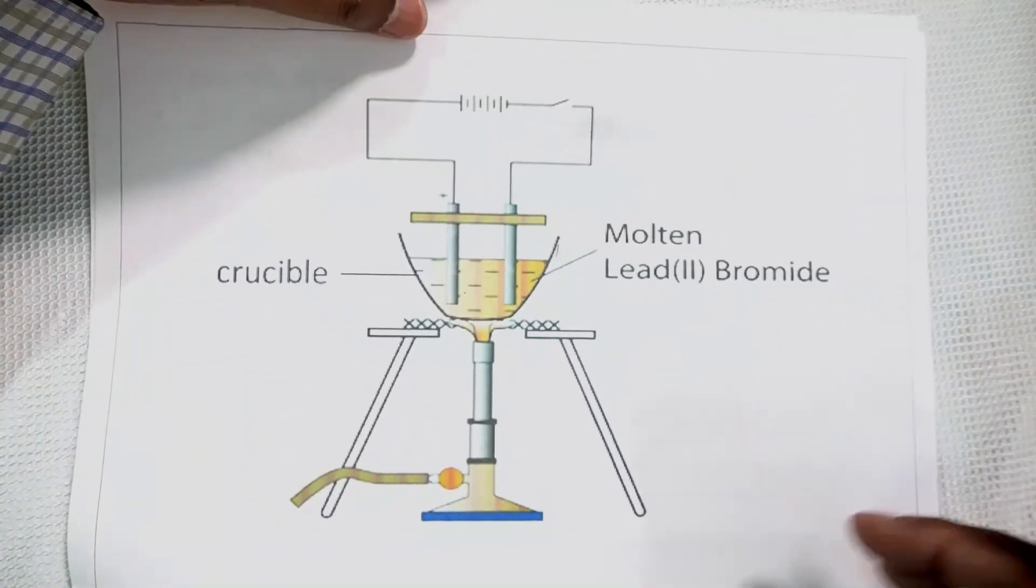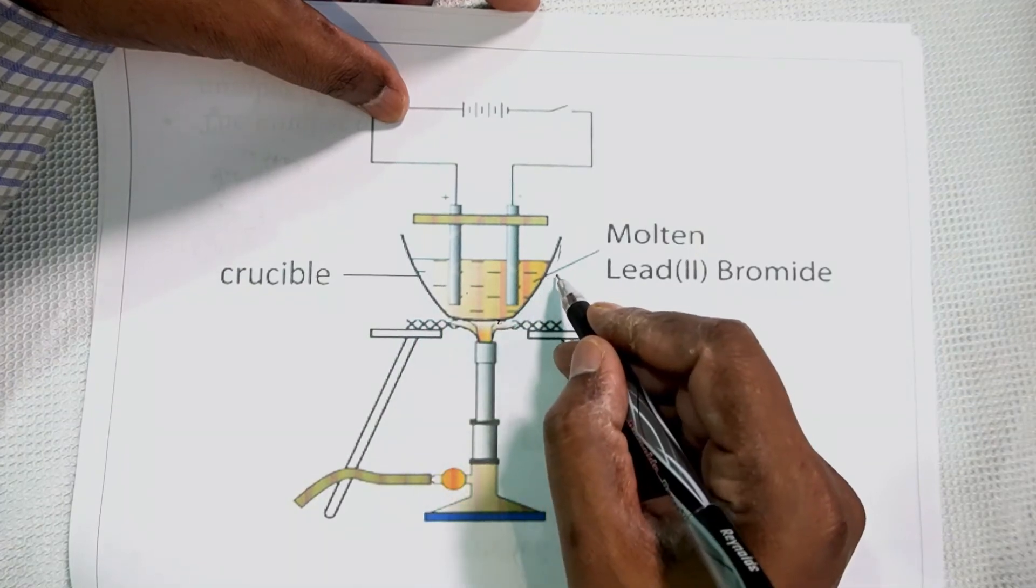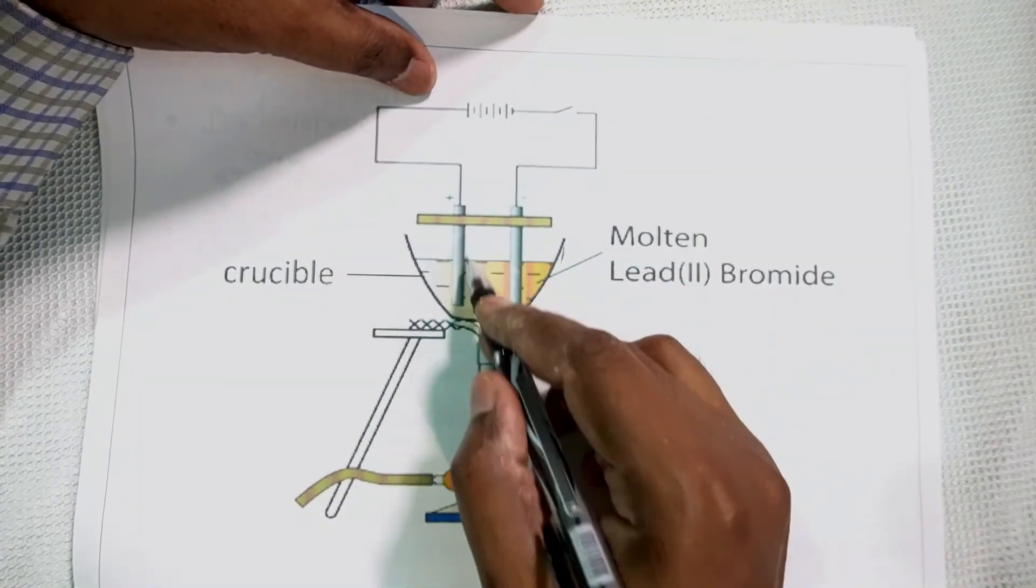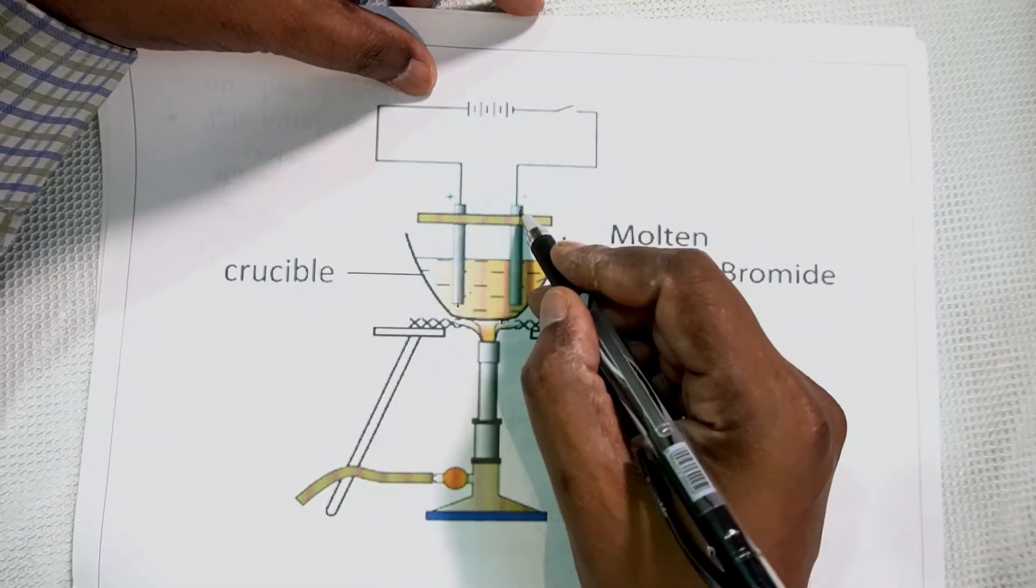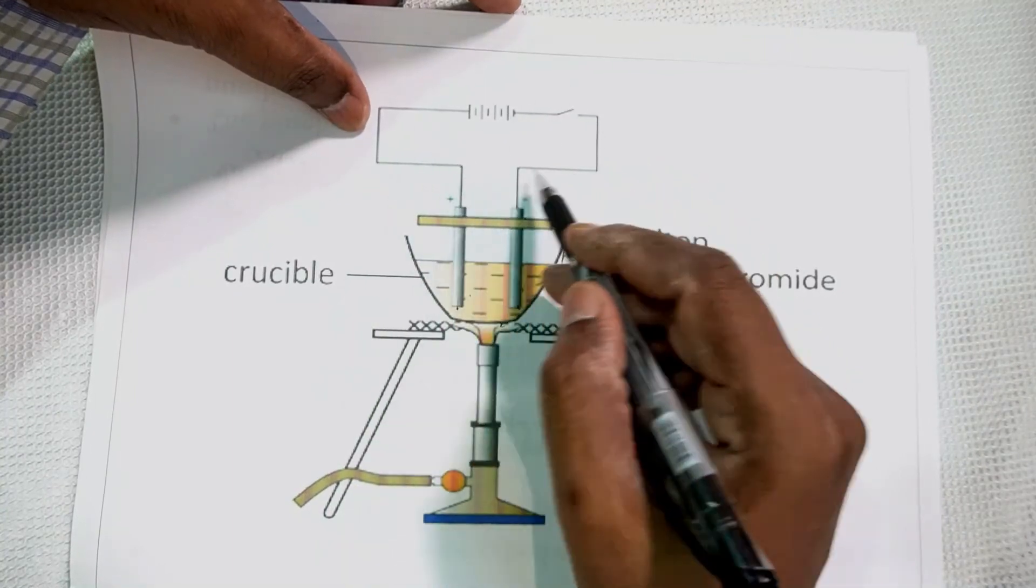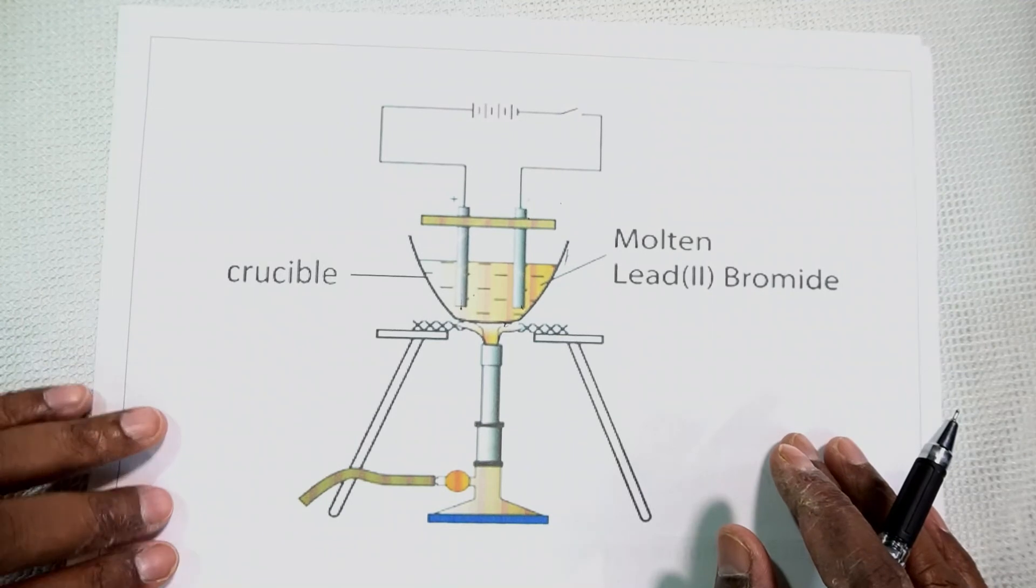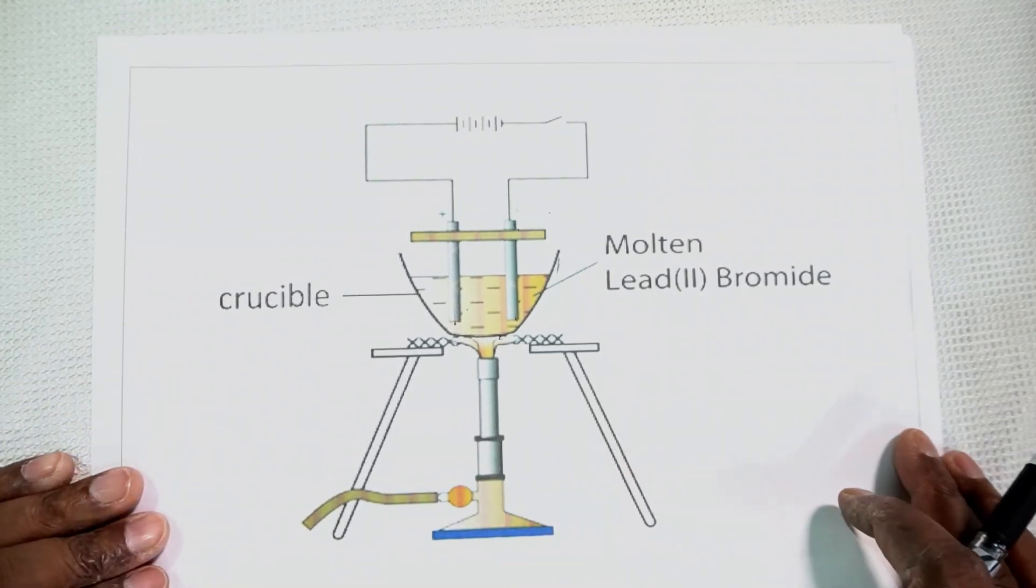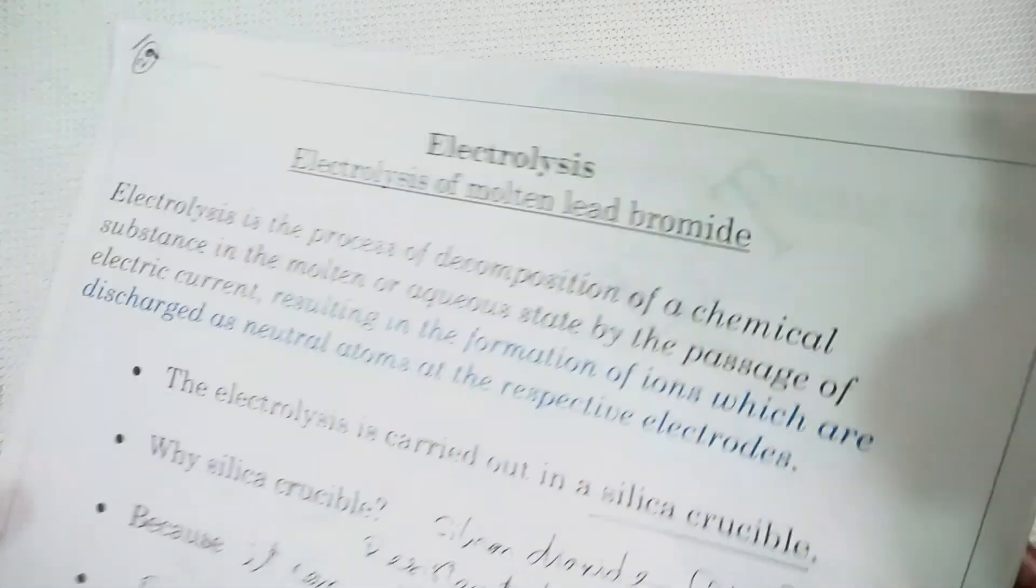So here we have the setup, experimental setup. The silica crucible is there. Heating is done so that it melts. Molten state is achieved and then the rods are there. The anode and the cathode. Here we have the anode here which is graphite and the cathode here it can be graphite or iron and the setup, the electric current is being connected. So the reaction takes place. So the electrolysis of molten lead bromide gives us lead at the cathode and bromine vapors at the anode.